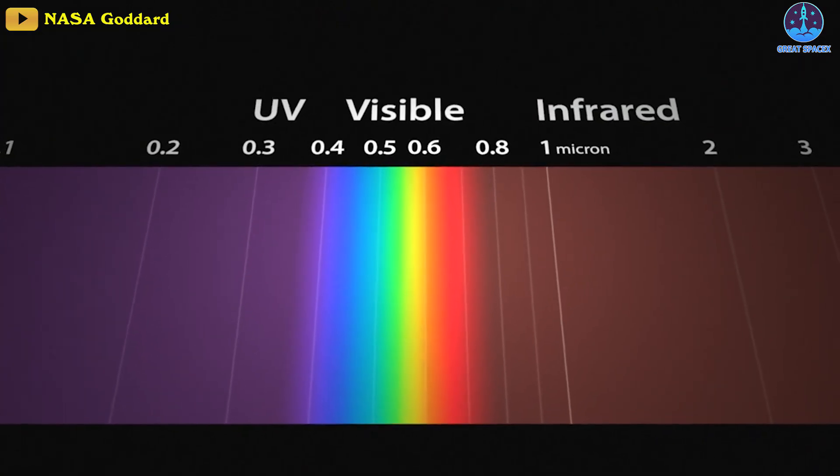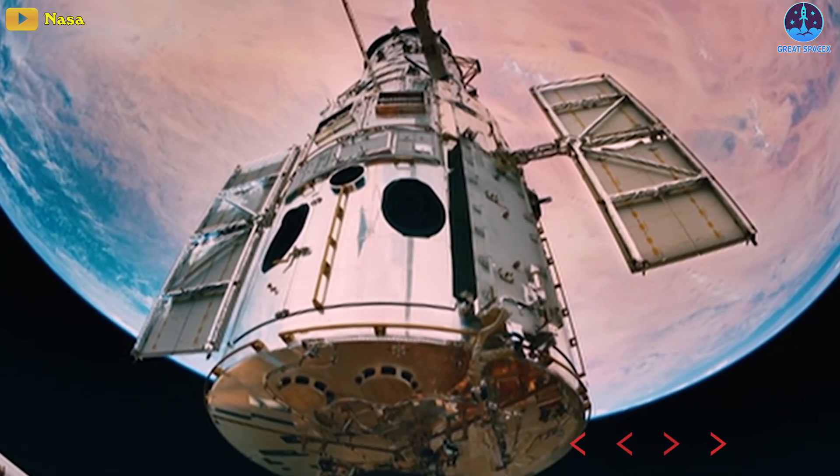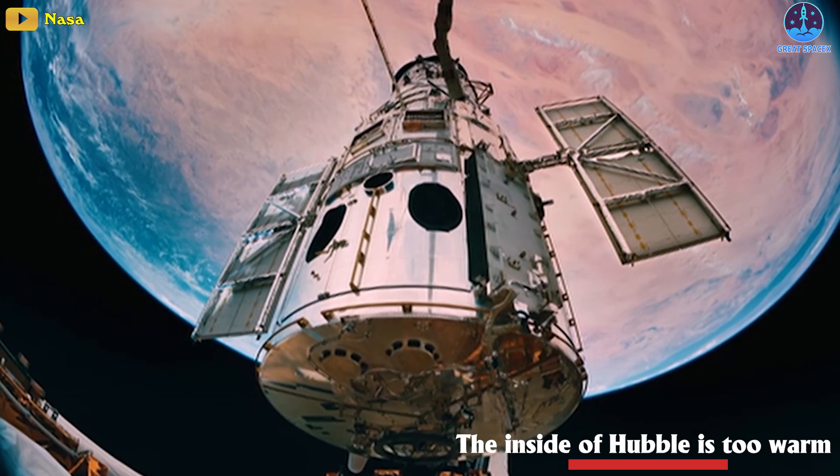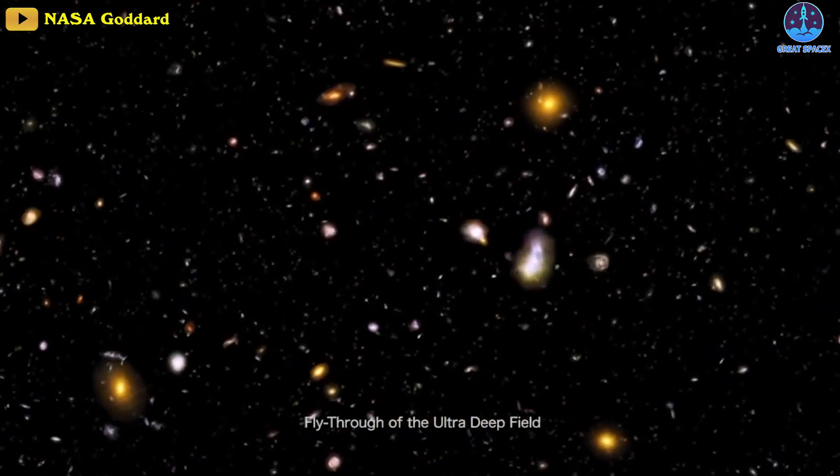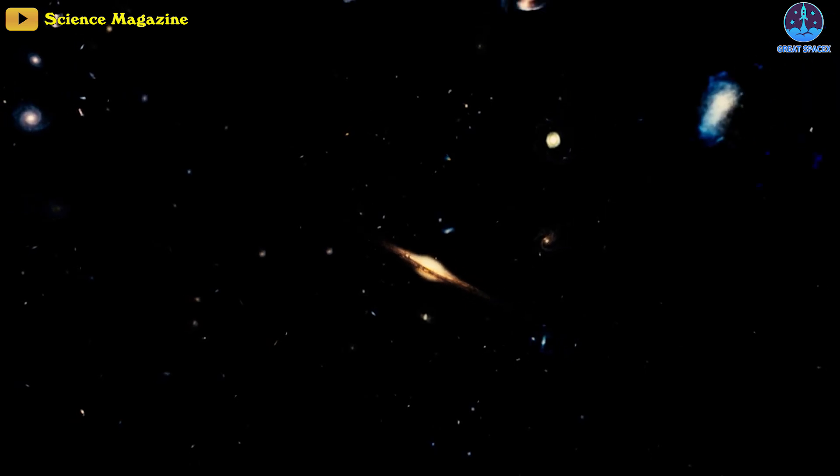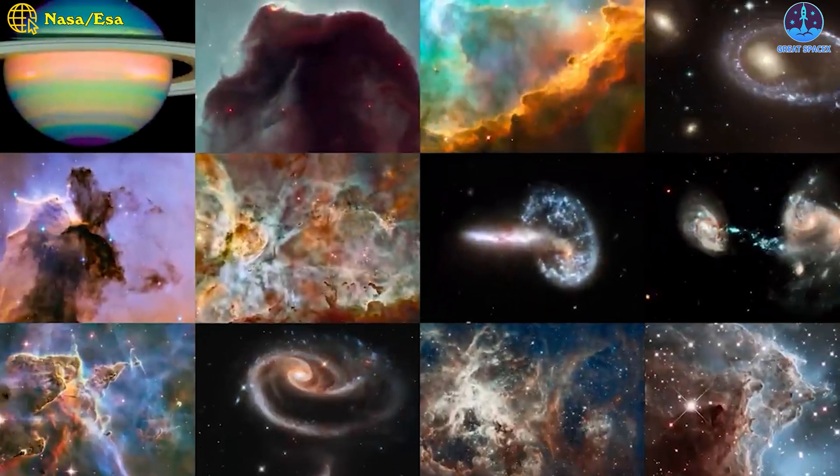In many ways, Hubble represents the greatest astronomical endeavor ever undertaken by our civilization. But it's also fundamentally limited. Hubble can't observe at wavelengths longer than about 2 microns because it gets heated by the Sun. The inside of Hubble is too warm to observe at mid and far infrared wavelengths. Hubble's other major limitation is its narrow field of view.